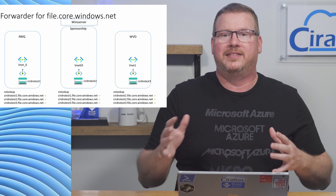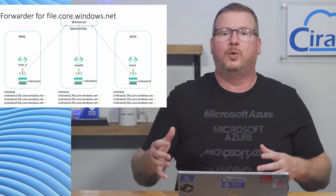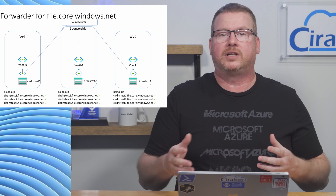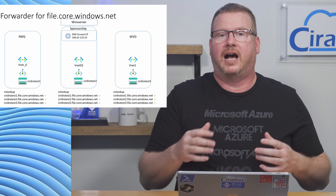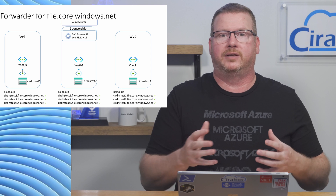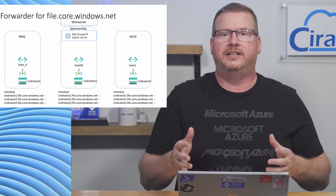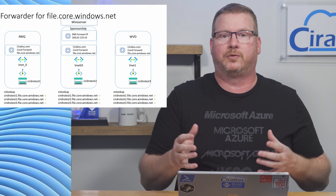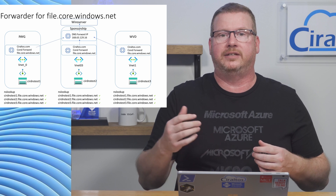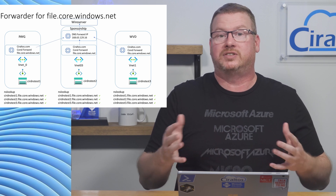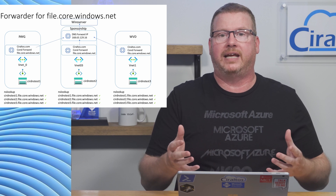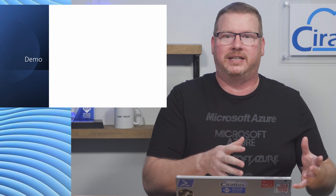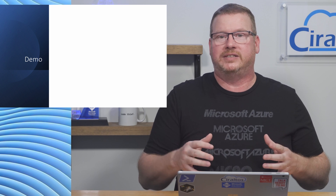In this video we use private DNS zones in Azure to create a DNS hub. The private endpoints in the spokes will update DNS information to this hub zone. From there, we'll configure a forwarder server on the VNet that will query the wire server IP address. Our internal DNS servers use conditional forwarding to send requests for the file.core.windows.net domain to that server, resolving storage accounts with a private endpoint to the internal IP address.